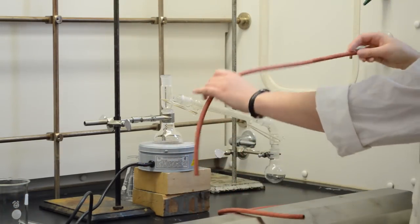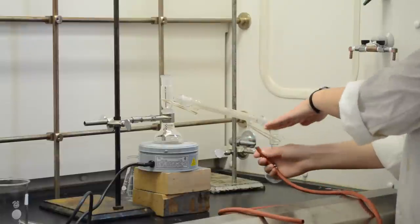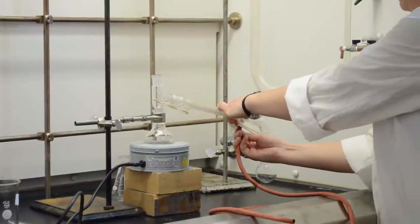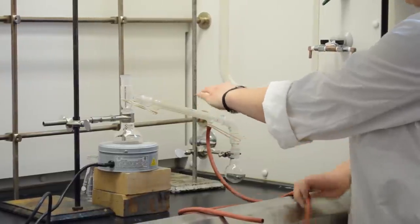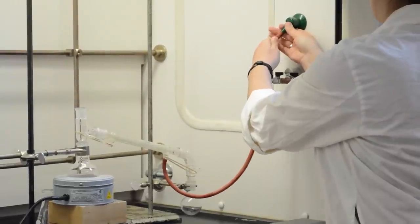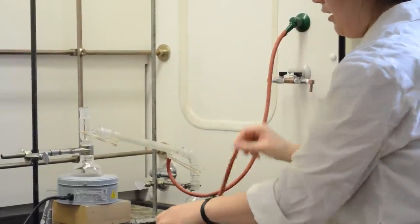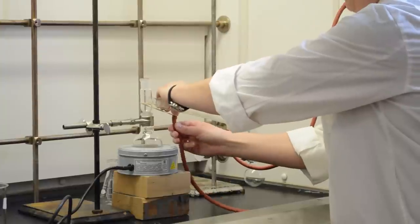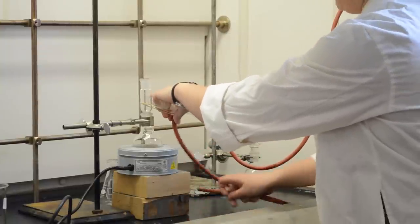Next, you need to add hoses. From the lower side of the condenser closest to the receiving flask, attach the hose to the cold water. On the more elevated side, attach a hose leading to a drain.